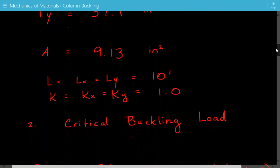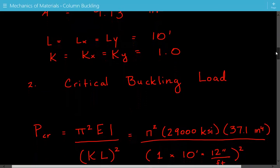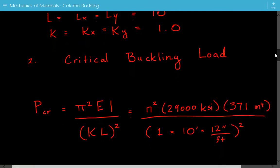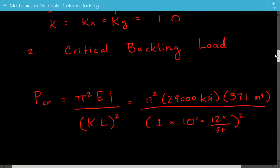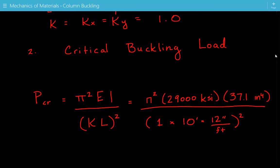Next we're going to calculate the critical buckling load using the Euler buckling formula. The critical buckling load is equal to pi squared times the modulus of elasticity times the moment of inertia divided by the effective length squared. The effective length is equal to the effective length factor k times the unbraced length l. We plug in the numbers: pi squared times 29,000 ksi times the moment of inertia. We have two values, Ix and Iy.